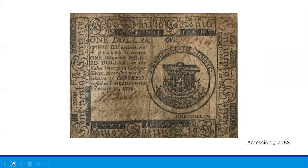Over the next five years, Congress authorized ever-increasing amounts of this paper money to meet the urgent demands of American forces for food, clothing, pay for soldiers, transportation, and every other sort of military equipment. By the end of 1779, the total reached an unprecedented amount of $241,552,780 printed.